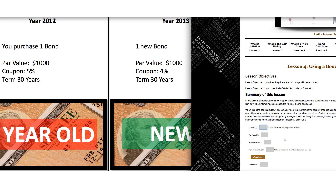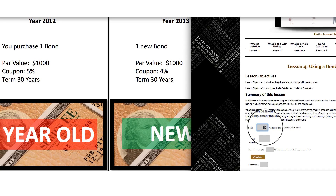Here at the Buffettsbooks.com bond calculator, we're going to put in these values. The first value is the coupon in dollar amount. Our bond purchased in 2012 had a 5% coupon, and the calculator takes values in dollars, so a 5% coupon with a $1,000 par value equals $50. Note that this calculator is for annual calculations, so we're adding up the coupons for the year — $50 total, because you'd receive two $25 coupons.